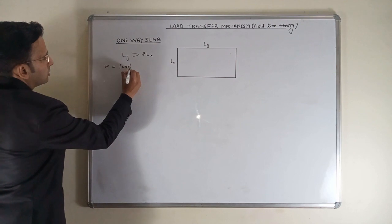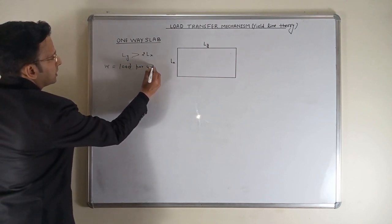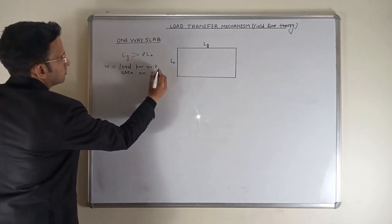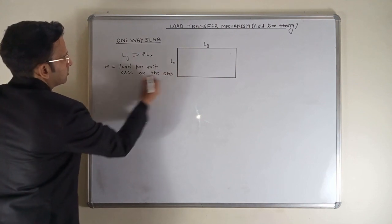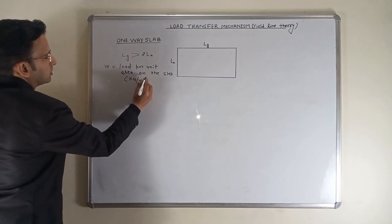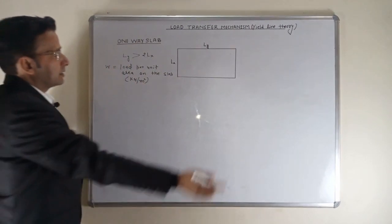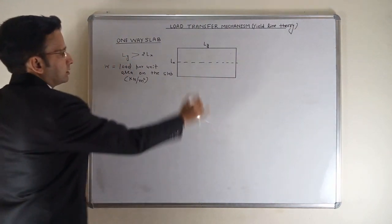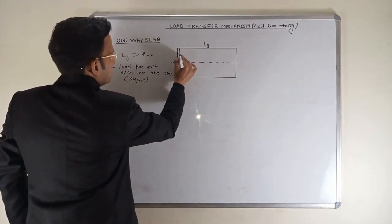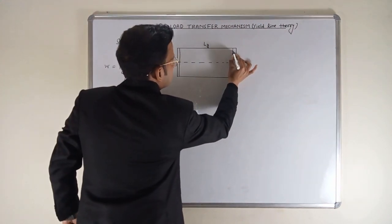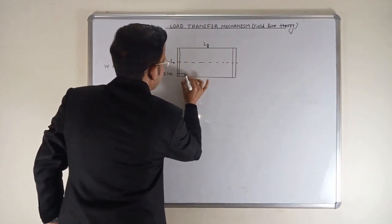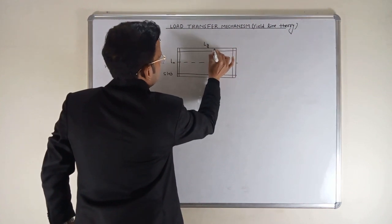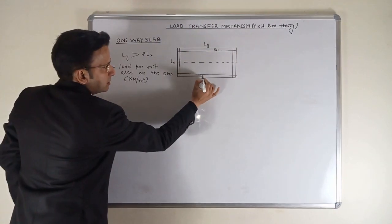Let's suppose W is equal to load per unit area on this slab. Its unit is kilonewton per meter square. If I divide the slab in two equal parts in this way, and for example this beam, this is another beam.